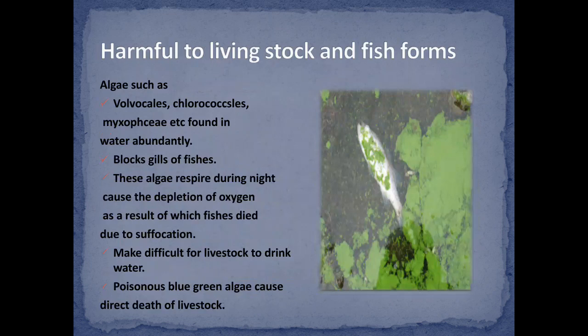Red tides are harmful to livestock and fish. Algae such as Ulva, Cladophora, and Chlorococcales found abundantly in water block the gills of fishes. These algae respire during the night, causing depletion of oxygen. As a result, fish die due to suffocation. This also makes it difficult for livestock to drink the water. Poisonous blue-green algae can cause the direct death of livestock.